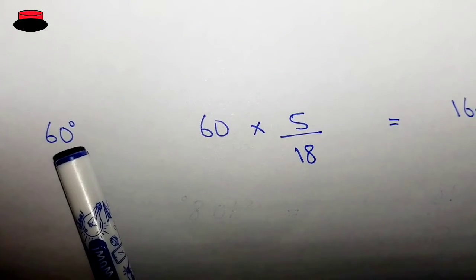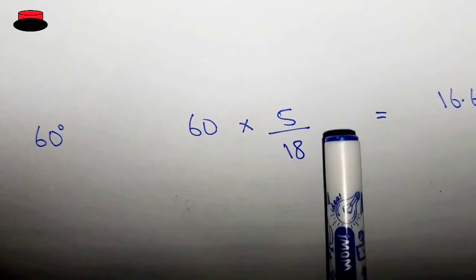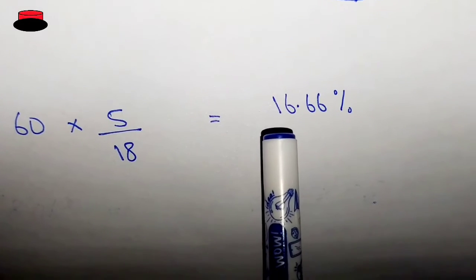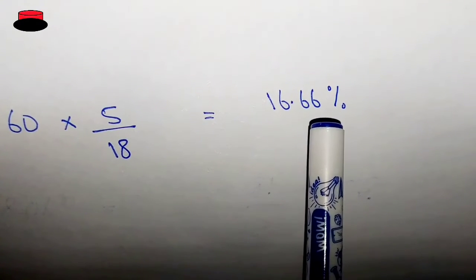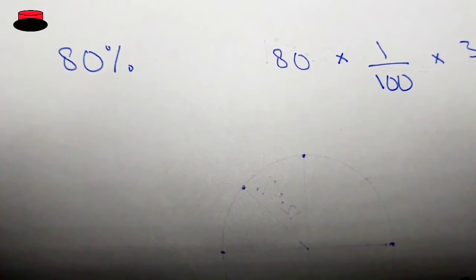We have 60 degrees. 60 into 100 over 360, or you can say 5 over 18, and the answer will be 16.66 percent. And in the same way we will be converting from percent into degree.